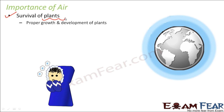Air is important for the survival of plants because plants need various gases for their basic activities. Plants prepare their own food by photosynthesis, for which they need carbon dioxide, which is present in air. To generate energy, they carry out respiration, for which they need oxygen. And for their growth and development, they need various nutrients — one major nutrient being nitrogen, which is another gas present in the air. So without any of these, a plant cannot survive, making air extremely important for plants.